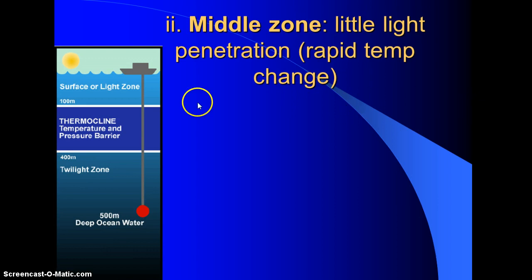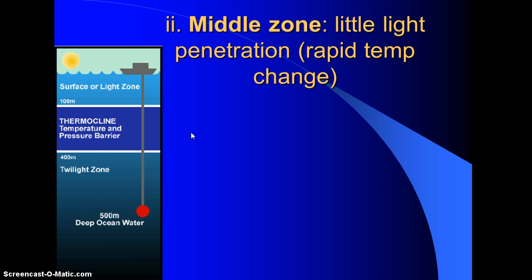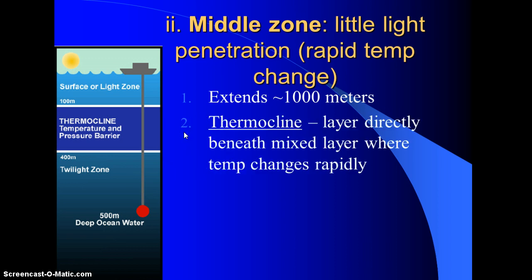Going further down is the middle zone, also named the thermocline. Very little light penetration reaches this layer, so there's a rapid change in temperature. On the test or quiz, the zone with the most rapid temperature change is the middle zone. It extends about 1,000 meters — similar to the depth of surface currents. The thermocline is directly beneath the mixed layer, and temperature changes dramatically through it.